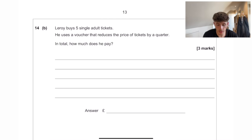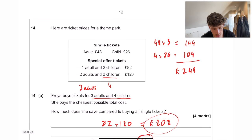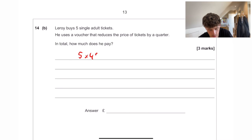Leroy buys five single adult tickets. He uses a voucher that reduces the price of the tickets by a quarter. In total, how much does he pay? So five single tickets, that would be five times 48, which is equal to £240. And then if we want to take a quarter off, we can just times it by 0.75, because that's like 75%. And that gives us £180 in total.